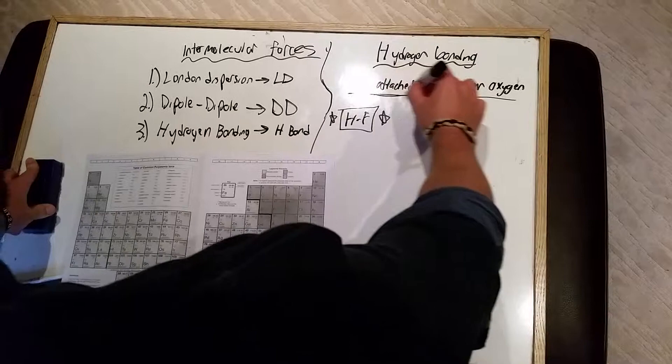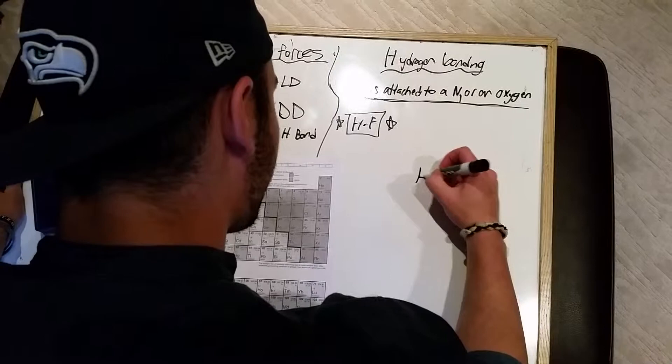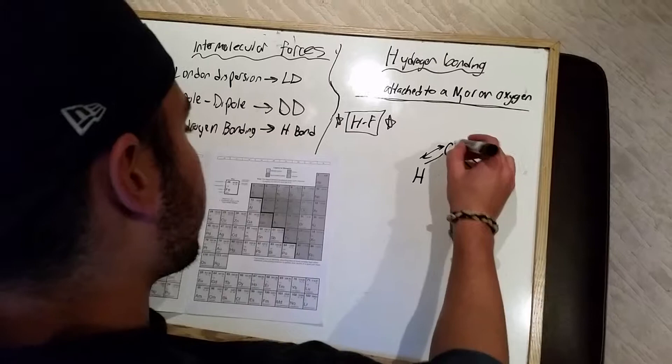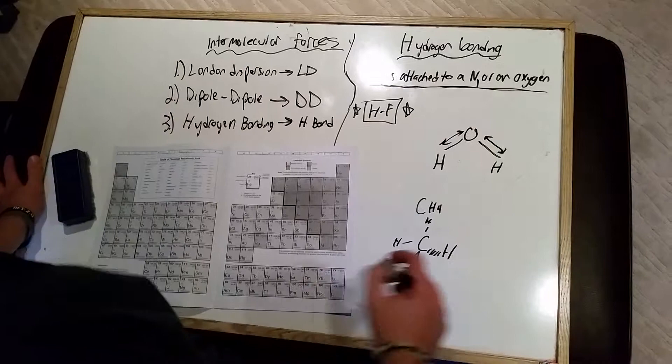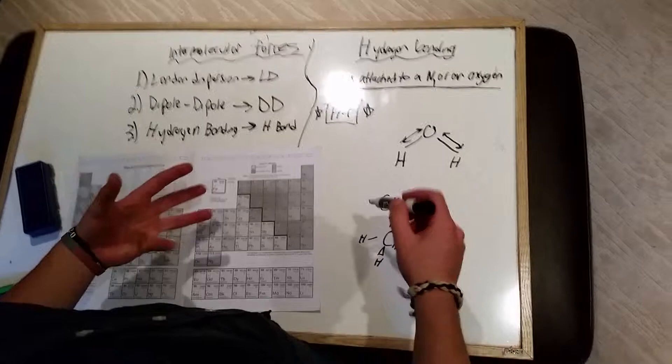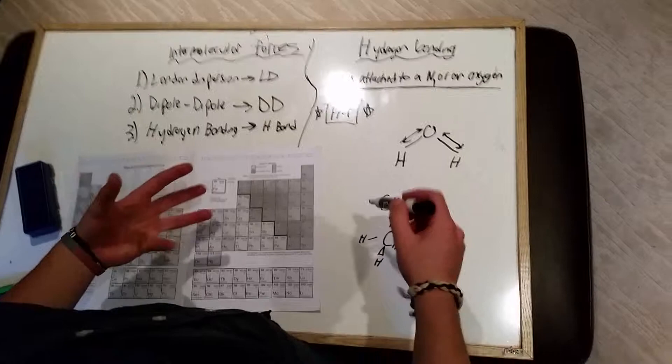For example, in H2O, there is hydrogen bonding between both of the hydrogen atoms and the oxygen. But in CH4, there is no hydrogen bonding even though there are four hydrogen atoms, because carbon is not a nitrogen or an oxygen — it's only a carbon. So CH4 would not have hydrogen bonding, but H2O would.